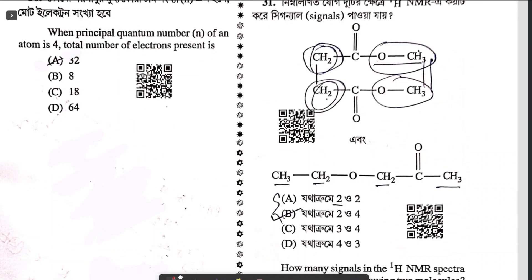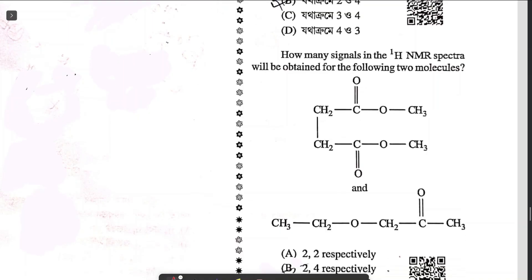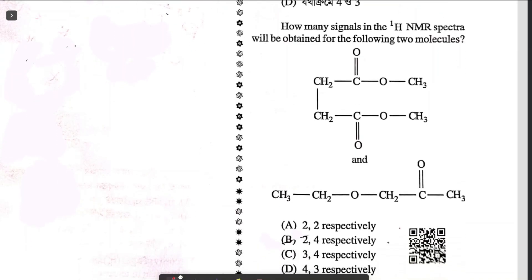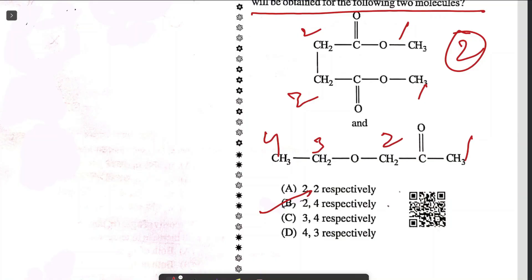Question thirty: when the principal quantum number n = 4, total number of electrons = 2n² = 32 — answer is option A. Question thirty-one: how many signals in ¹H NMR spectra for two given molecules? For molecule one: 1, 2 then 2, 1 — so two peaks. For molecule two: 1, 2, 3, 4 — four peaks. Answer is option B.